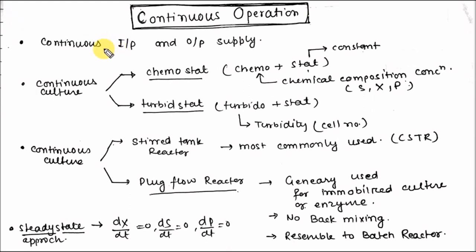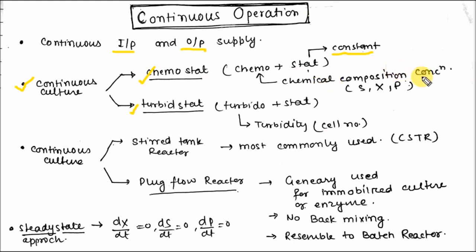In continuous operation, there is continuous supplying of feed and continuous removal of product or biomass. Continuous culture can be divided into two parts: chemostat and turbidostat. Chemostat — 'chemo' means chemical composition, 'stat' means static or constant — is a system where chemical composition or concentration of substrate, biomass, or product is kept constant. In turbidostat, 'turbido' refers to turbidity or cell number, and the cell number is kept constant.